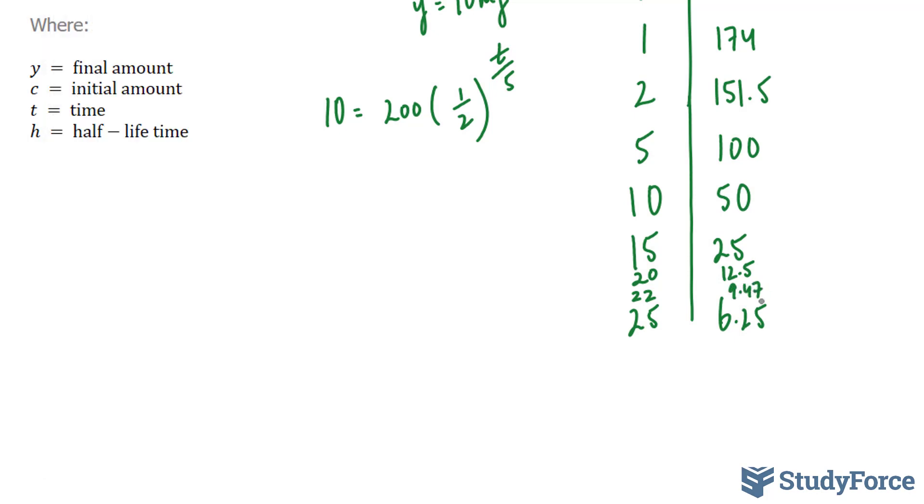And that's the best we can do before going into decimal numbers that are slightly less than 22. So we can assume that after 22 hours, so therefore, after 22 hours, the amount of caffeine will decrease to approximately 10 milligrams.